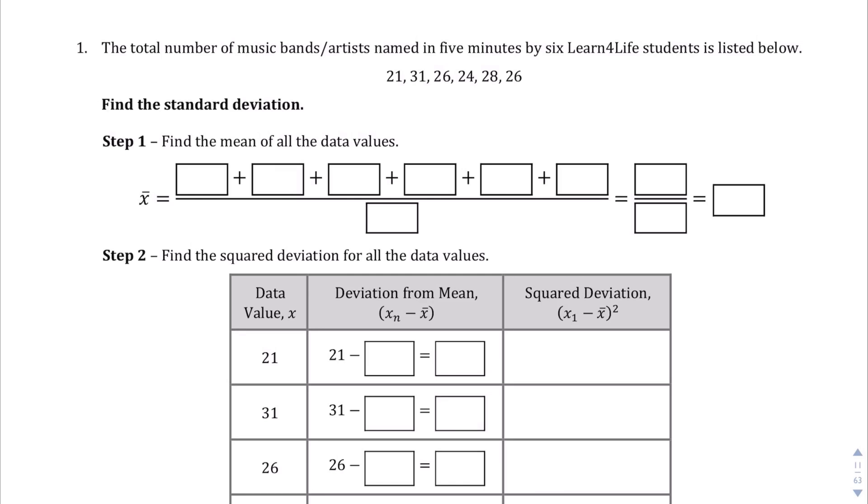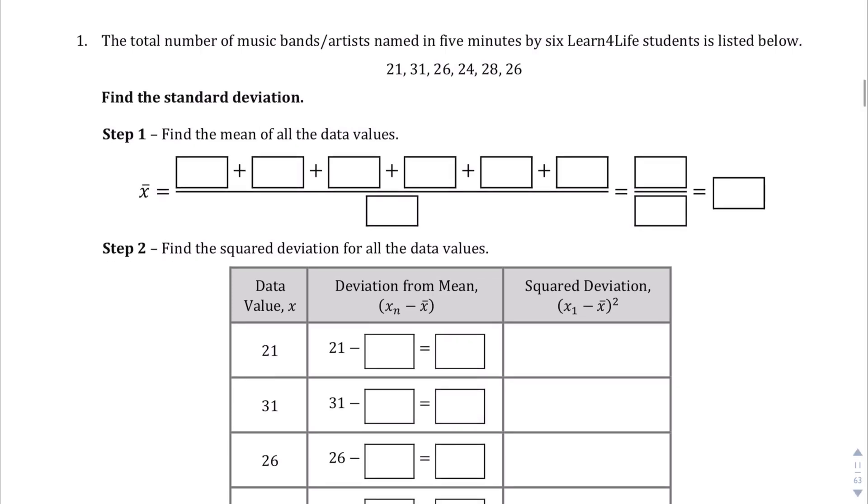So, the first step in finding the standard deviation is to find the mean or the average of all the data values. So, let's go ahead and write this in. In this case, I'm not going to actually write it in order from least to greatest, because we're not trying to find the median here. 21, 31, 26, 24, 28, and 26. And there are six items here.